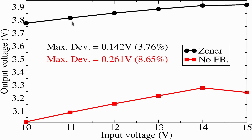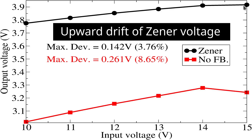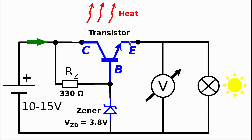Furthermore, we mentioned that the zener voltage will have an upward drift when we change the input voltage, and this drift is mainly due to the effect of temperature upon the zener voltage. The question we want to tackle today is: can we make minimal changes to this circuit such that the output voltage stays close to the 3.8V zener voltage? Also, we want to improve the circuit so that it is more stable with respect to temperature effects.